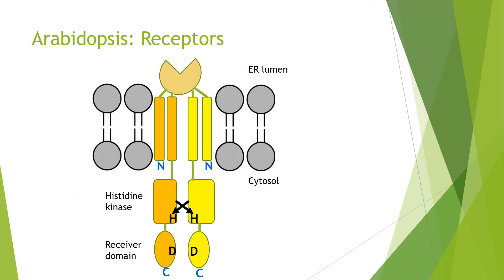Here's a schematic of the Arabidopsis receptor. Starting from the N-terminus to the C-terminus of each monomer, there is a transmembrane helix and a ligand binding domain, then another transmembrane helix — so two transmembrane helices. C-terminal to that is a histidine kinase domain containing a histidine to be phosphorylated in trans. At the very C-terminus, there are receiver domains containing aspartate residues, which will eventually have a phosphate group put upon them.